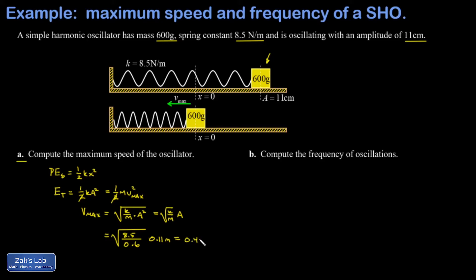In part b we're asked to compute the frequency of oscillation. I remember this formula that the period is 2π times the square root of m over k. I'll post a link to the video where this was first derived. Now frequency is just the reciprocal of period so that would be 1 over 2π square root of k over m.